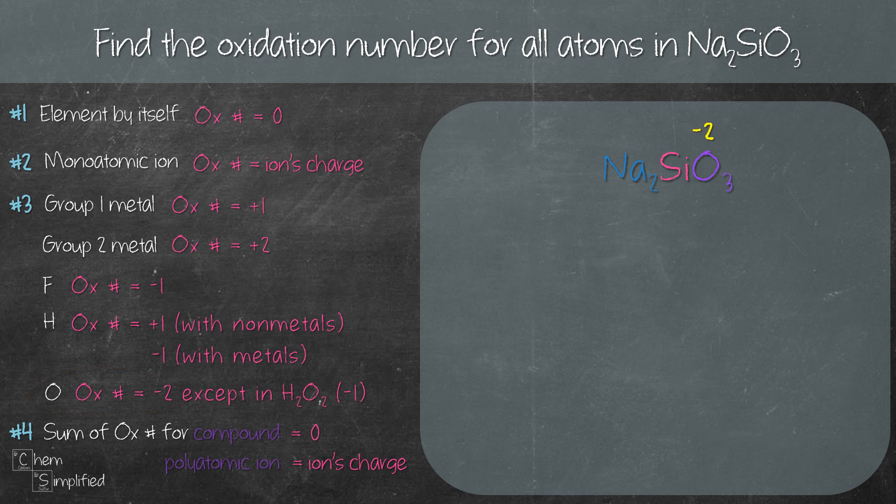Now what about Na and Si? If we follow the first part of rule number 4 which is sum of the oxidation number for compound equals to 0, it'll be a little bit difficult for us to find the oxidation number for Na and Si because we can't solve an equation with two unknowns in one equation.